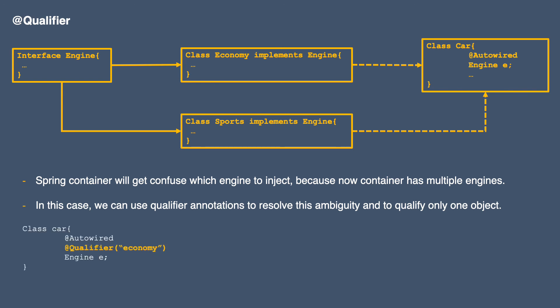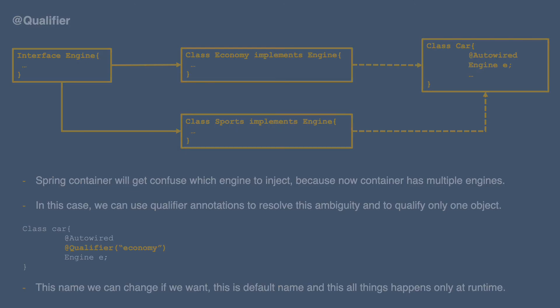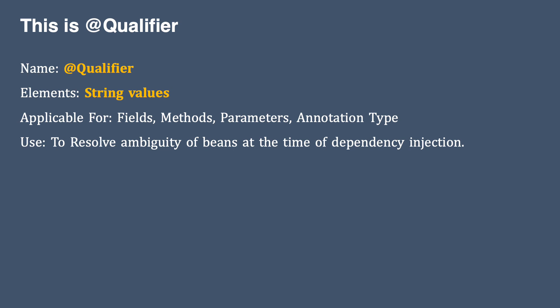In this case we can use the Qualifier annotation to resolve this ambiguity. In our class we can do something like this — here we pass 'economyEngine' as the qualifier value, and this time when we create the Car, only EconomyEngine will be injected. This 'economyEngine' here is the default bean name, but we can change it if we want. Everything happens at runtime, which is why the retention policy is runtime. The string element inside the annotation holds the name of the qualifying bean. The benefit of using this annotation is to reduce ambiguity at the time of dependency injection.